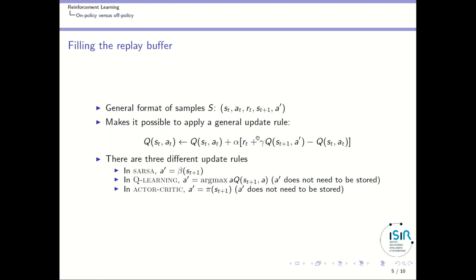When filling the replay buffer, what kind of samples should we use? The general idea is to use samples of the form: current state, current action, the reward you get from that, the next state you get from performing that action in that state, and then a next action. By using this general format, I can apply a general update rule. This rule is quite general, because from it you can apply the SARSA update rule, the Q-learning update rule, and the actor-critic update rule — all the information you need is there.